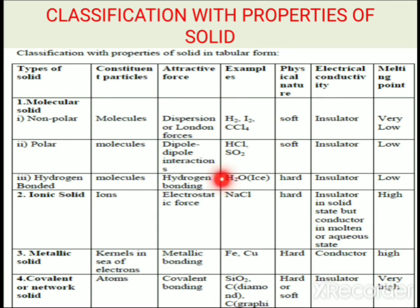Hydrogen bonded molecular solids — H2O (ice). Ionic solids — NaCl, cesium chloride. Metallic solids — iron, copper, and other metals. Covalent or network solids — SiO2, diamond, graphite.